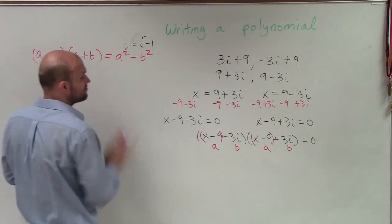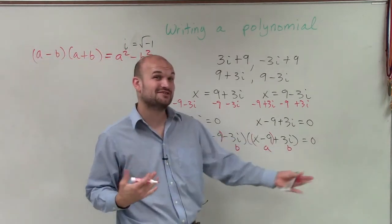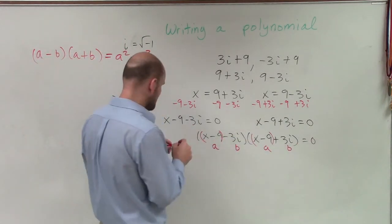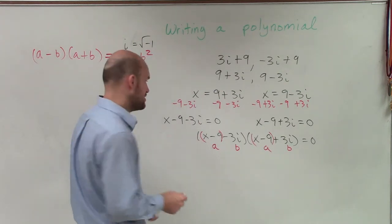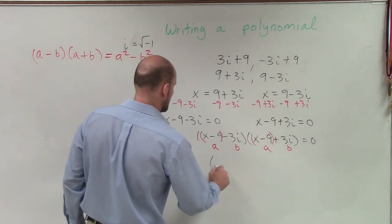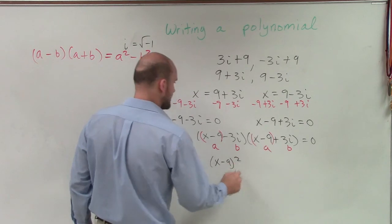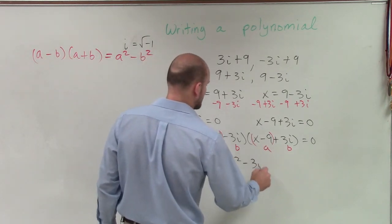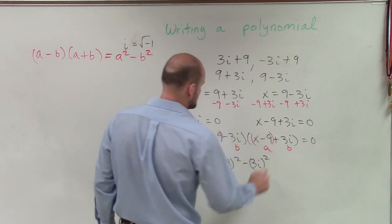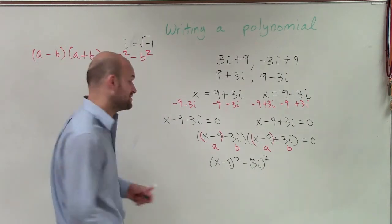So now we have this perfect square trinomial. So rather than having to factor everything out, I can just multiply this as a perfect square trinomial. And I can just write x minus 9 squared minus 3i squared. And now I think this is a little bit easier to go through.